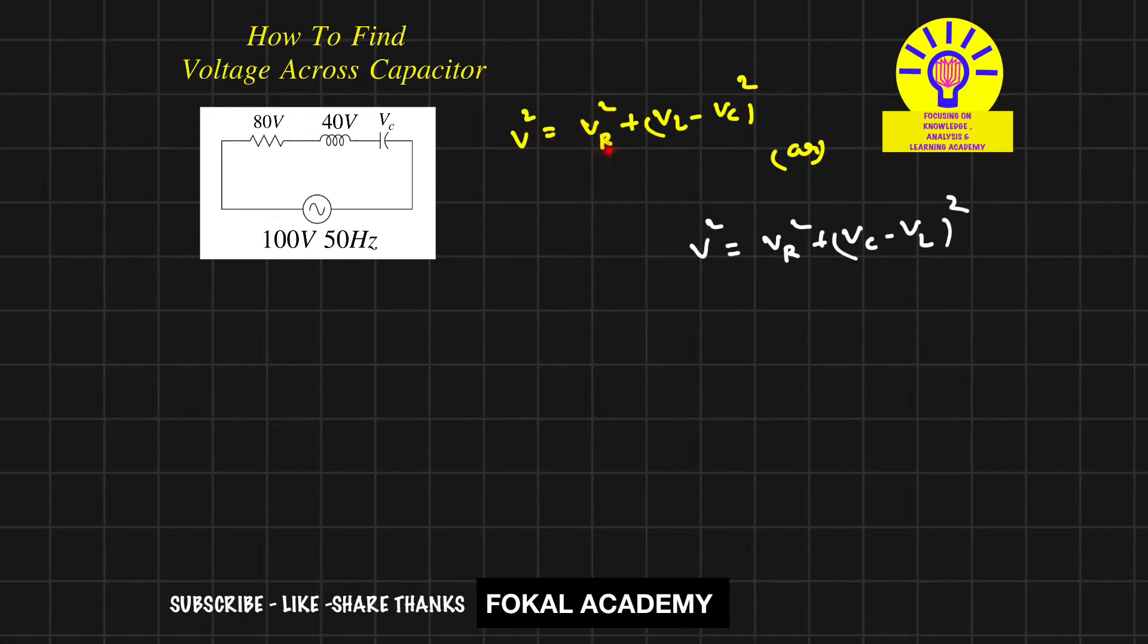Both formulas are equal. The total voltage source squared equals the pure resistance voltage drop squared plus the change in voltage drop across the reactive elements squared. We can write VL minus VC or VC minus VL, both are the same. The voltage drop is always positive, so we consider the equation that gives a positive result.